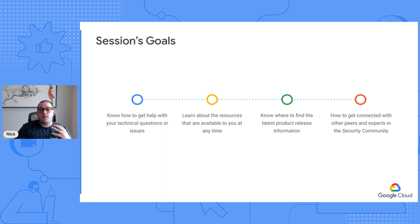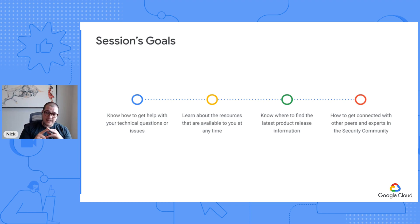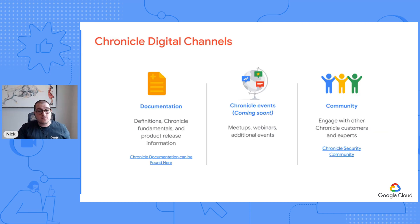At the end of this session, there are four main things that I want you to take away. The first is knowing how and where to get help with your technical questions and issues. Next is where are the resources available to you at any time. You can get them on demand and know where to find the latest product release information. Chronicle is doing a lot of really cool things in the security space and I want you guys to stay up to date. And lastly, how do I get involved in the security community? This is where you'll get connected to your peers and some of the experts in the security space, and lots of great information lives in our community.